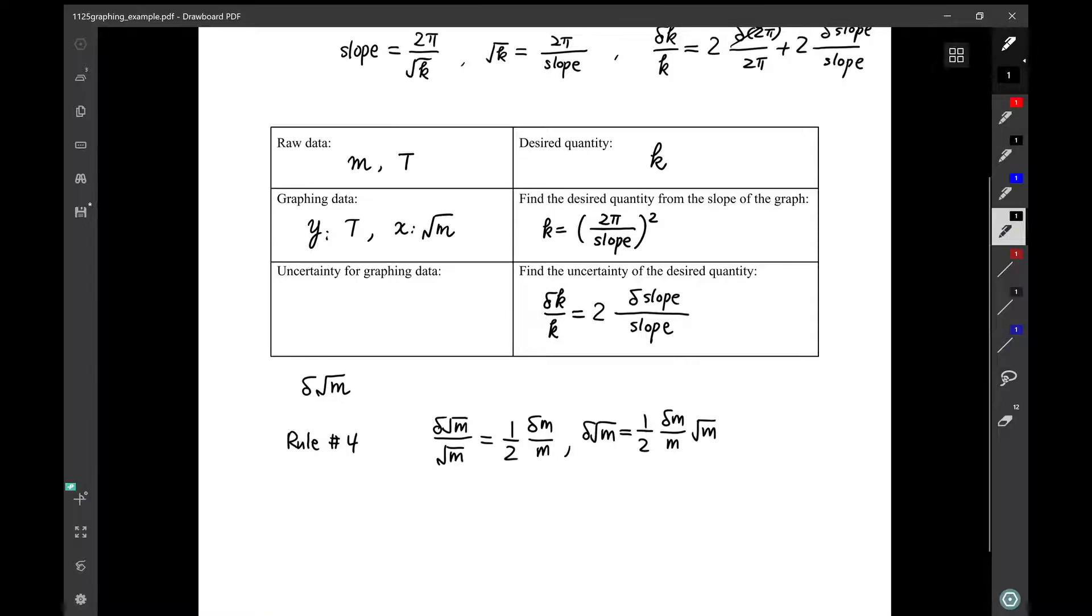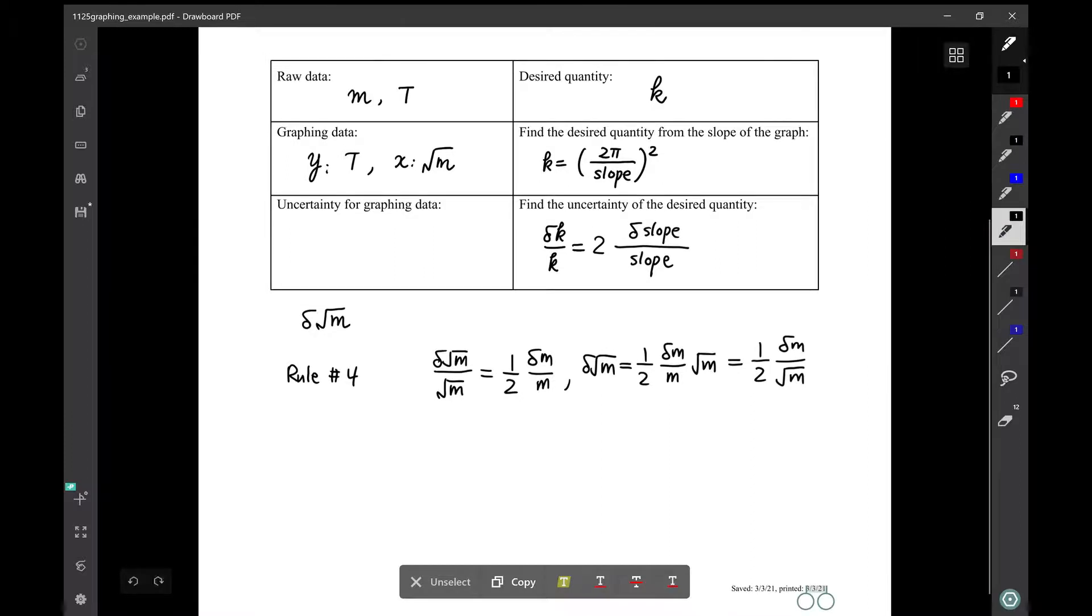You can stop here, but if you want to further simplify this equation, you can cancel √m and end up with a half δm over √m.